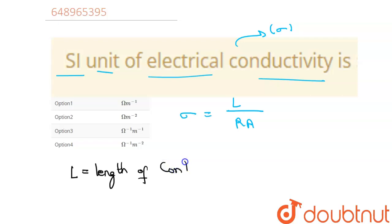L is length of conductor, R is resistance of conductor, and A is the area of cross-section of conductor.